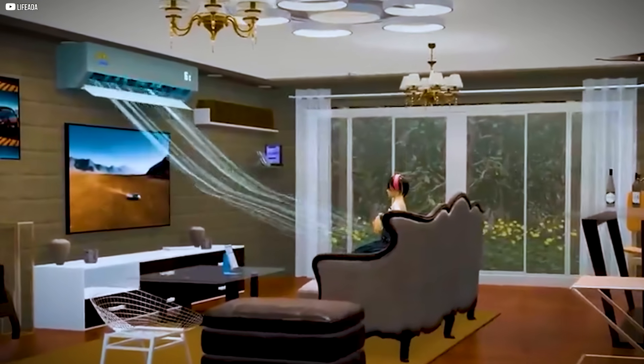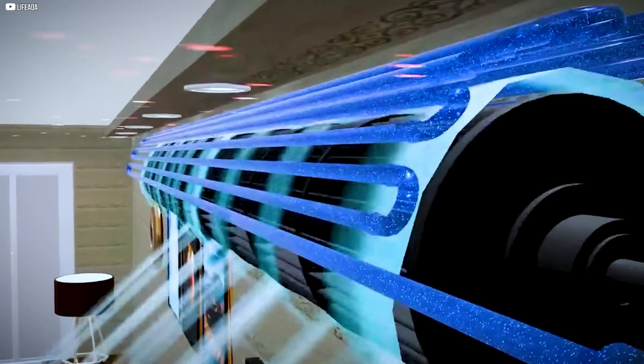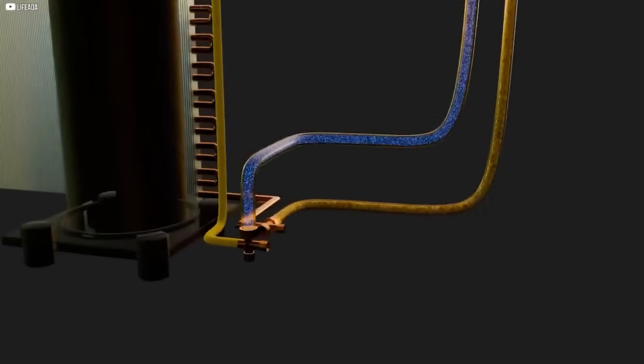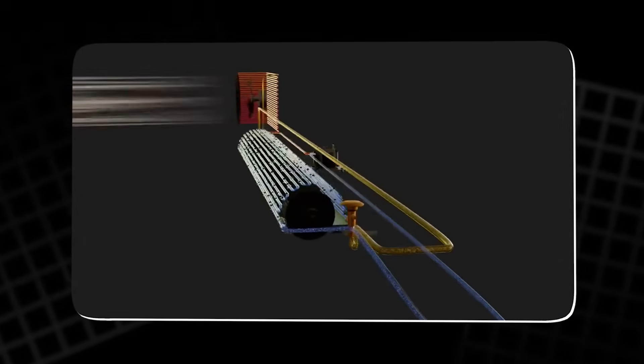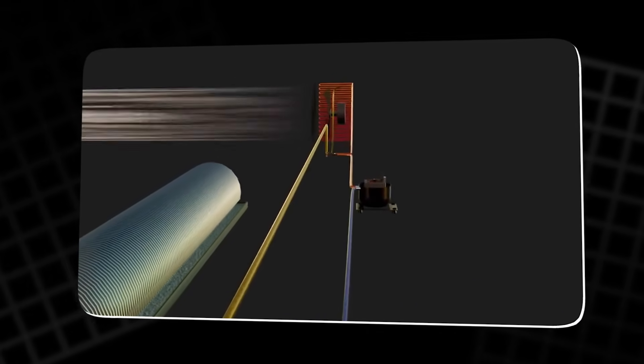The efficiency of a heat pump is measured by its coefficient of performance, COP, which tells you how much heat the system delivers compared to the electricity it consumes. For example, a COP of three means the pump provides three times as much heat as the electricity it uses.